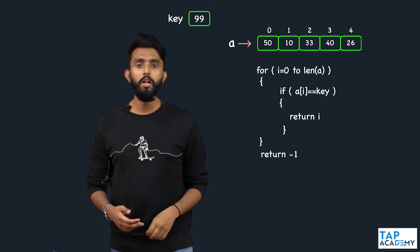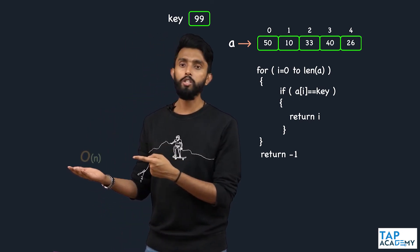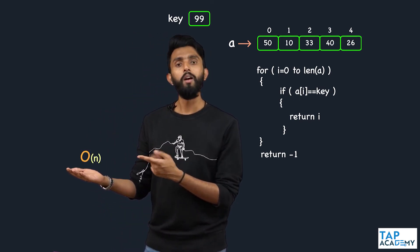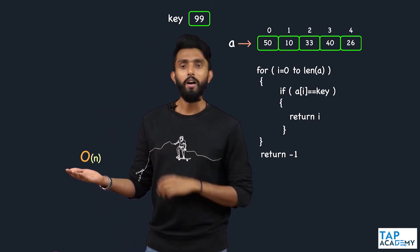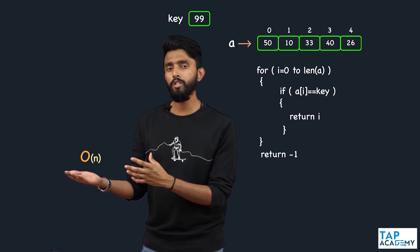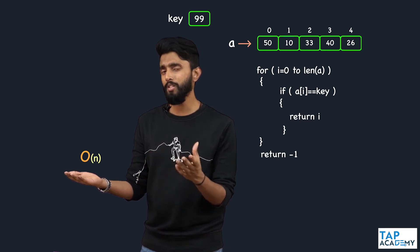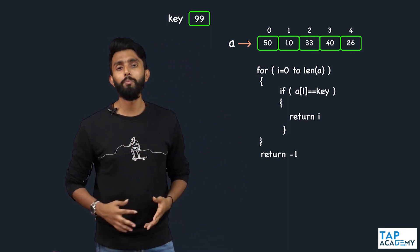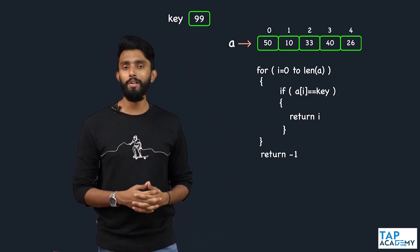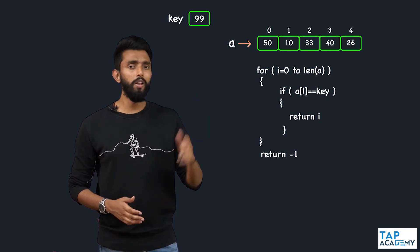The time complexity is O(n). Clearly, this is not efficient. Are there more efficient searching algorithms? Definitely — we will look at them later. But this is the time complexity of linear search.